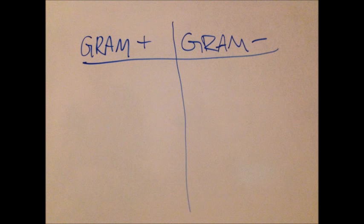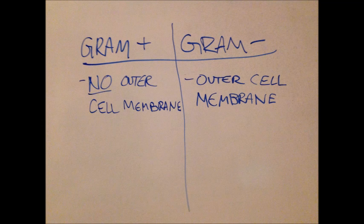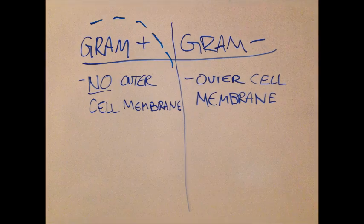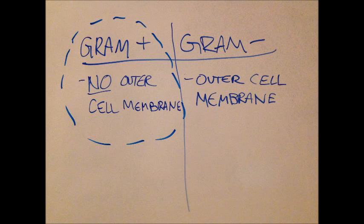Quorum sensing varies in different types of bacteria, and not all bacteria can carry out the process. The ones that can are divided into two main groups, gram positive and gram negative bacteria. In a nutshell, the difference between gram positive and gram negative bacteria is that gram negative bacteria have an outer cellular membrane, whereas gram positive bacteria don't. For the purpose of this video, we will be focusing on the quorum sensing process in gram positive bacteria.